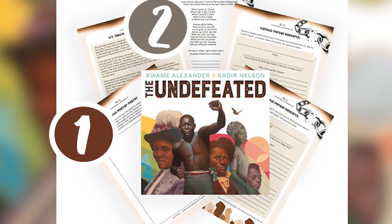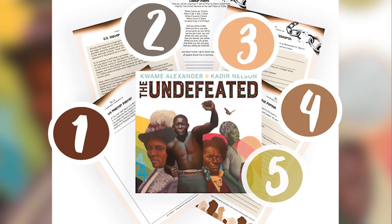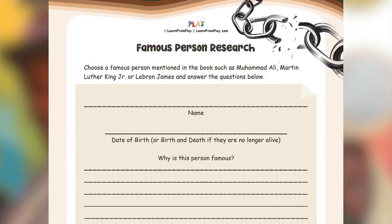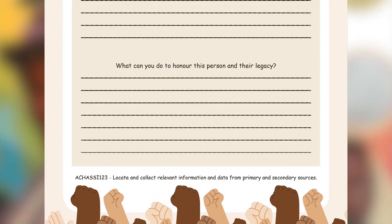There are five activities for this book and they are all aimed at older primary students in grades five or six. The first of these is a research activity which asks students to choose one famous person mentioned in the book and answer questions about that person's life.